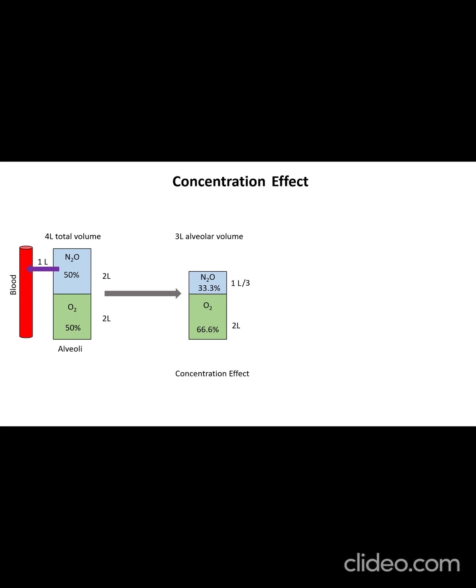Now the reduction in alveolar volume by 1 liter creates sub-atmospheric pressure in the alveoli, prompting the patient to inhale an additional 1 liter of the gas mixture containing 50% nitrous oxide and 50% oxygen, that is 500 milliliters of each gas. With this additional inhalation, the total alveolar volume returns to 4 liters, now comprising 1.5 liters of nitrous oxide and 2.5 liters of oxygen.